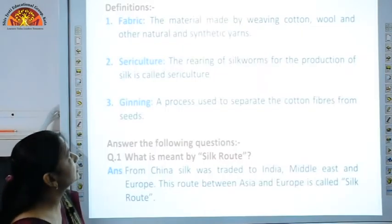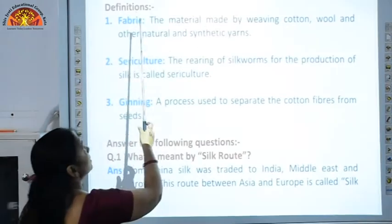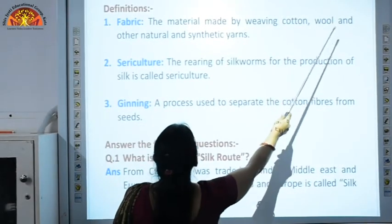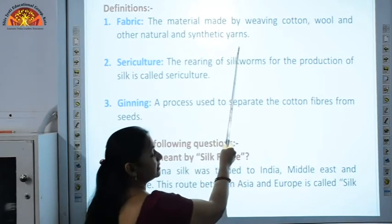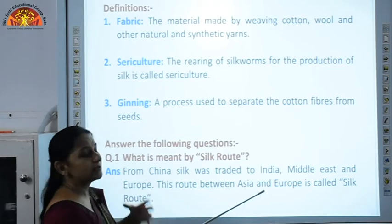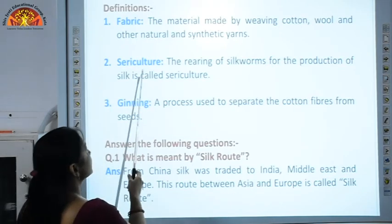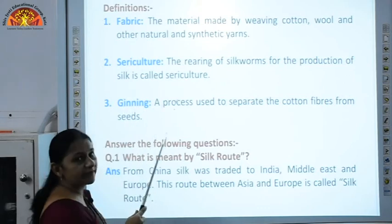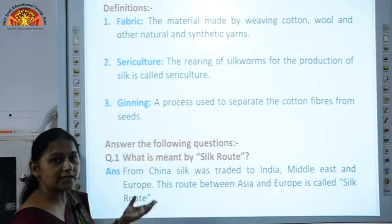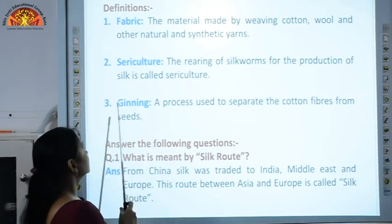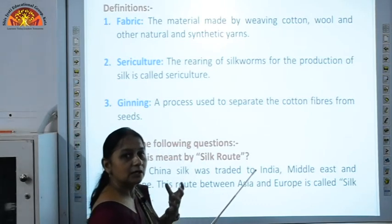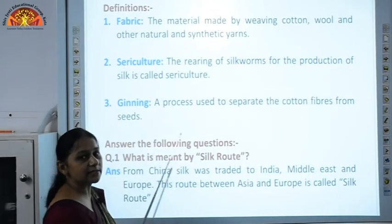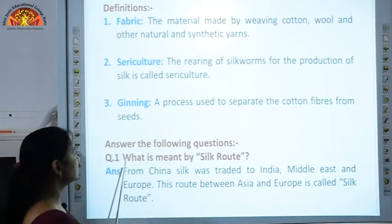Coming to the copy work of this chapter — the important definitions. The first definition is fabric: the material made by weaving cotton, wool and other natural and synthetic yarns. These yarns are woven to get fabrics. The next definition is sericulture: the rearing of silkworms for the production of silk. The third definition is ginning: the process used to separate the cotton fibers from seeds. This process is known as ginning.